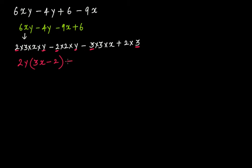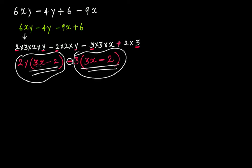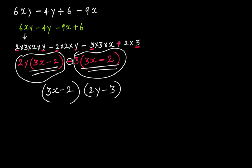Then we have a minus sign. In the second group — minus 9x plus 6 — we have 3 common. If you look at the first bracket, it is 3x minus 2, so we want 3x minus 2 on this side as well. Let's take out the minus sign and then 3 as the common factor. Since you have taken the minus sign outside, inside the bracket you have 3x, and the plus becomes minus 2. So this becomes 2y multiplied by 3x minus 2, minus 3 multiplied by 3x minus 2. Now 3x minus 2 is the common factor in both terms. Taking it out: this is 3x minus 2 multiplied by 2y minus 3. So 3x minus 2 multiplied by 2y minus 3 is the factorized form — the two factors are 3x minus 2 and 2y minus 3.